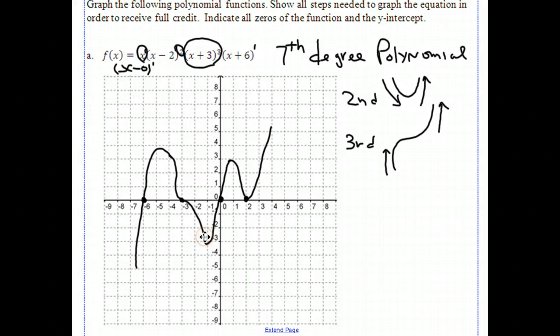Once again, we have a single root at negative 6. We have a triple root at negative 3, because of the 3 in the exponent of x plus 3. We have a single root at 0, because of the x to the first power. We have a double root or multiplicity of 2 at 2. And there you go.